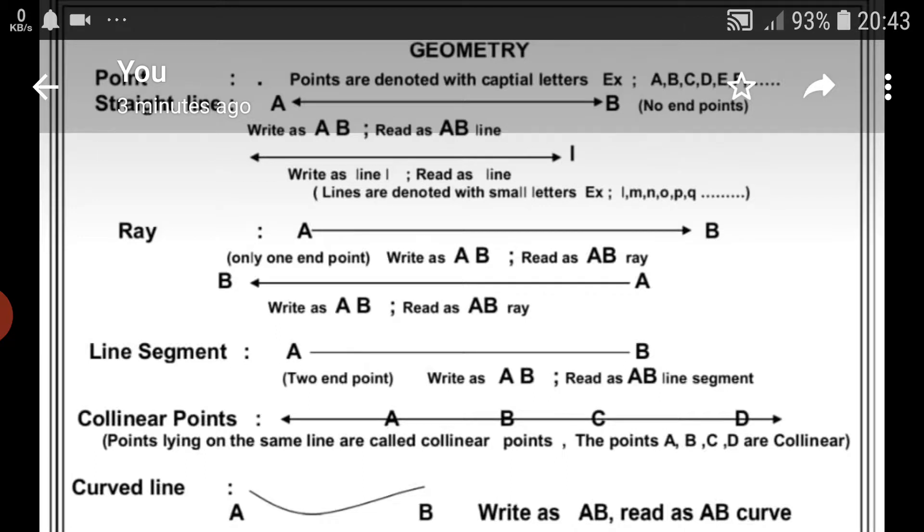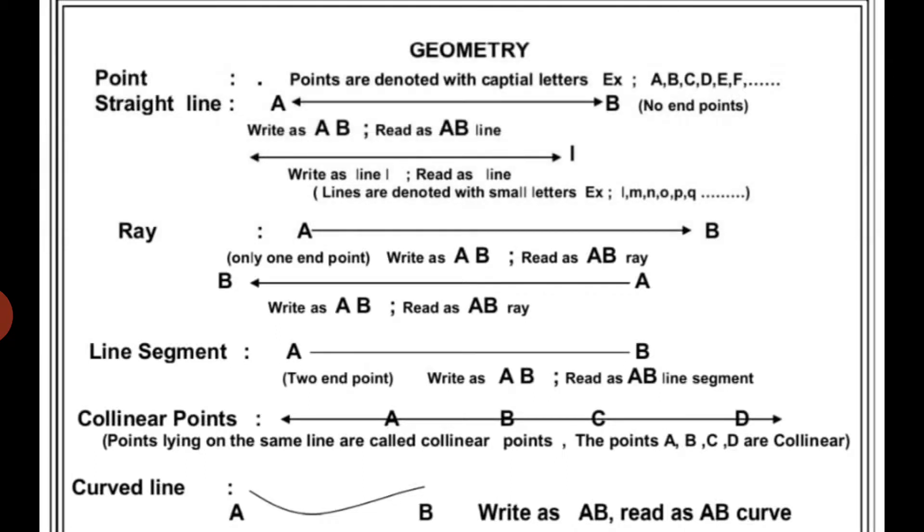Collinear points. Points lying on the same line are called collinear points. In the figure, the points A, B, C, D are collinear. So, the A, B, C, D are collinear points.